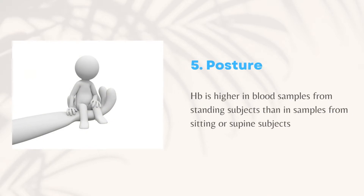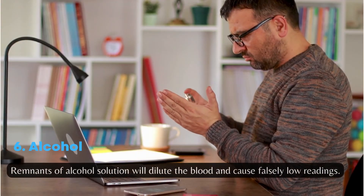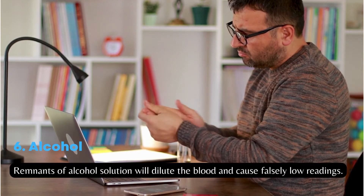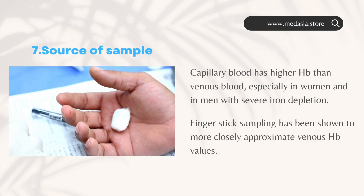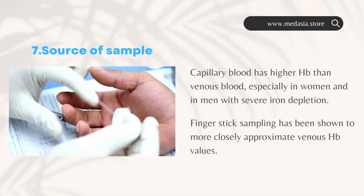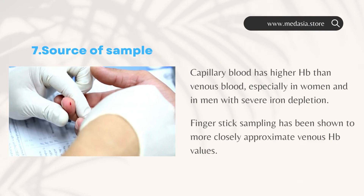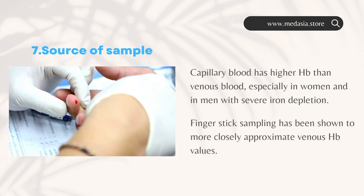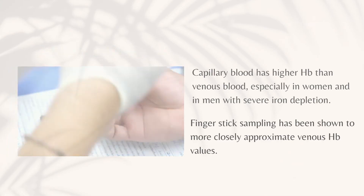Posture: Hb is higher in blood samples from standing subjects than in samples from sitting or supine subjects. Alcohol: remnants of alcohol solution will dilute the blood and cause falsely low readings. Source of sample: capillary blood has higher Hb than venous blood, especially in women and in men with severe iron depletion. Fingerstick sampling has been shown to more closely approximate venous Hb values.